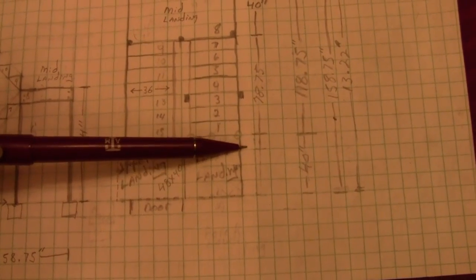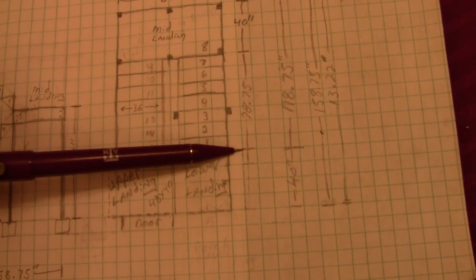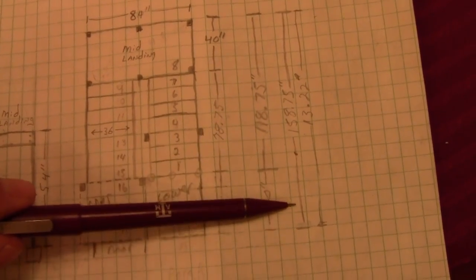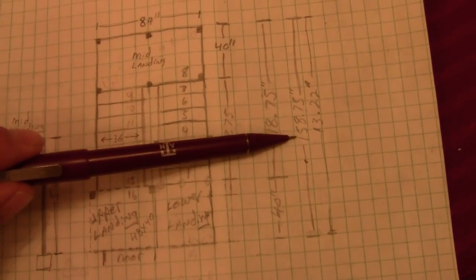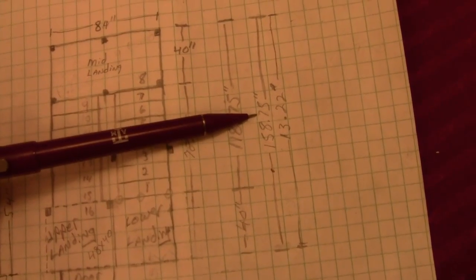And my lower landing, that's going to be 40 inches. So, that gives me kind of an overall known now span of all the steps and the landings combined. In this case, it's going to be 158 and 3 quarters inches.